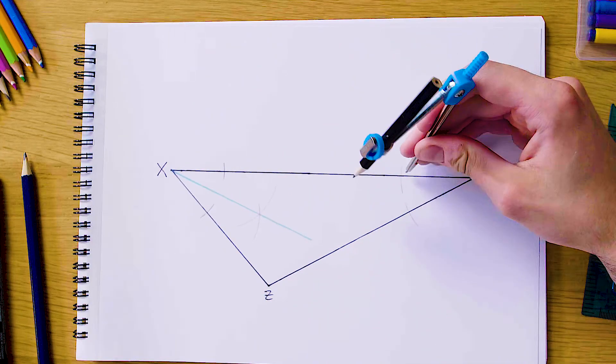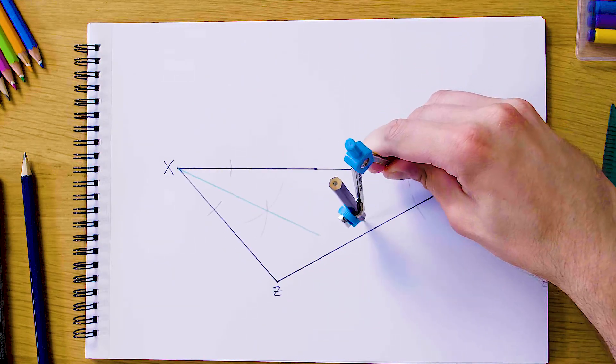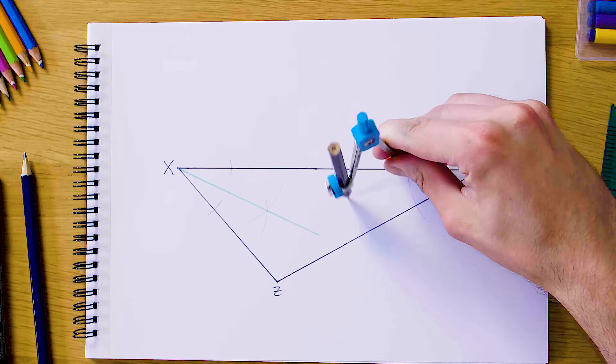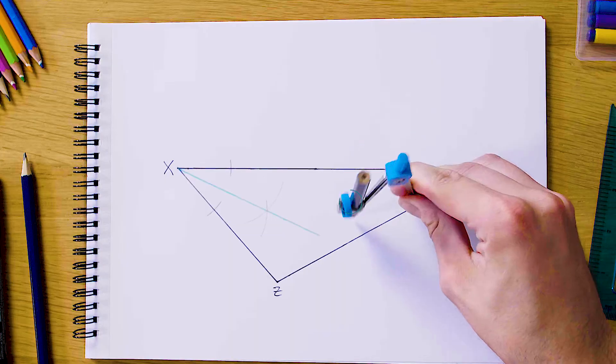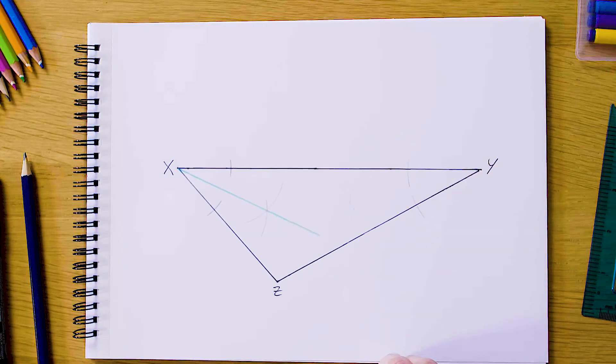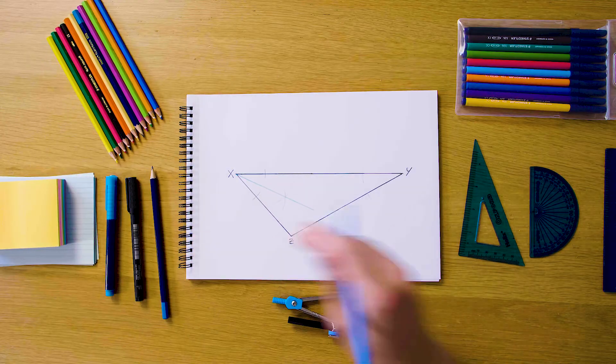We're going to use our compass again to get two arcs which cut once again out in the middle of the angle, so they're just going to meet somewhere out here. Once again we're going to join this back to the vertex at Y to get our angular bisector.